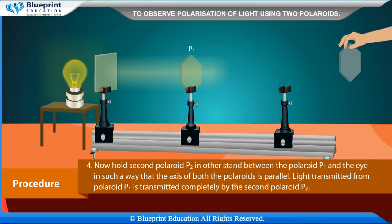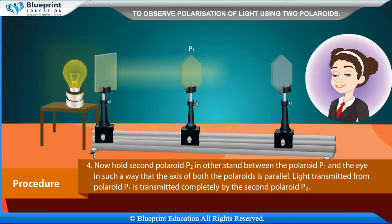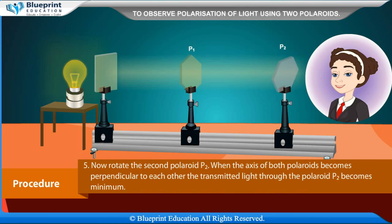Now hold second polaroid P2 in another stand, between polaroid P1 and the eye, such that the axis of both polaroids is parallel. Light transmitted from polaroid P1 is transmitted completely by polaroid P2. Now rotate polaroid P2. When the axis of both polaroids becomes perpendicular to each other, the transmitted light through polaroid P2 becomes minimum.